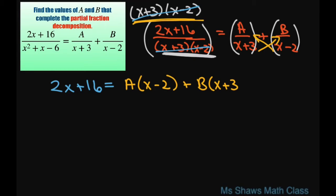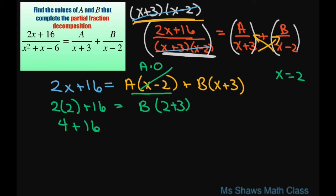Now to solve for our A and B, you choose x. So basically if we choose x equals 2, then this is going to be A times 0, which is 0, and we can solve for B. So everywhere there's x, you put 2. We already know this is just going to go to 0. Then you're going to have B times 2 plus 3. This gives you 4 plus 16 equals 5B. 20 equals 5B. Therefore B equals 4.